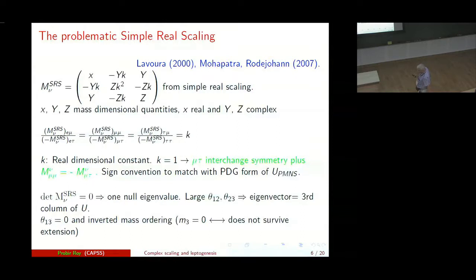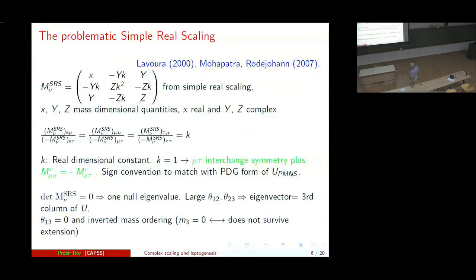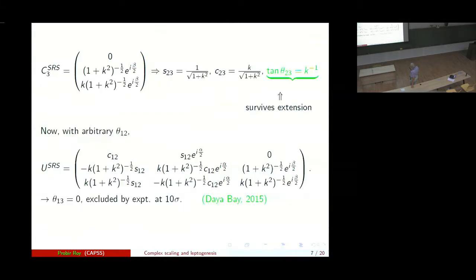Now this was proposed but this has right away run into a problem. The determinant of this matrix is 0 so that immediately predicts one massless neutrino. Furthermore, the eigenvector turns out to be the third column and that immediately means this. And so just by looking at the top element, you can see that theta_13 is 0 and that is ruled out by the Daya Bay experiment now at 10 sigma level. So between k and the angles theta_23 and sine and cosine these are the relation and you have the result that tan of theta_23 equals k. So it turns out that this result is going to survive even after we do complex extension. The unitary matrix in the simple real scaling form has this form and once again you see theta_13 is 0 which is not accepted.